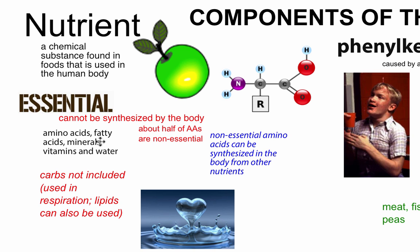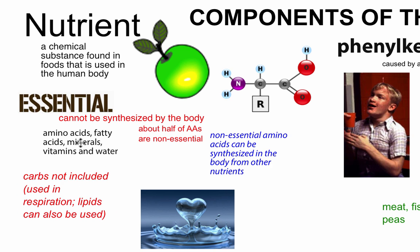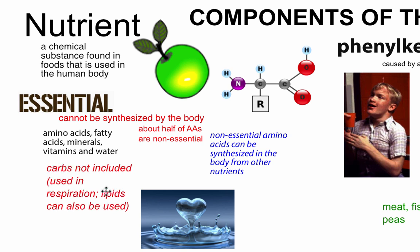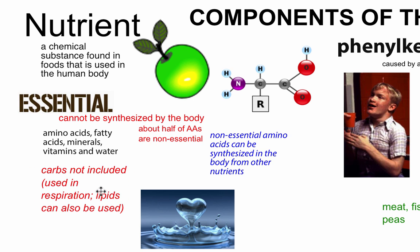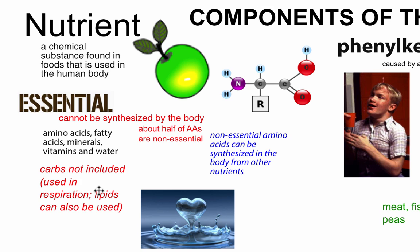Various types of essential nutrients include some amino acids — about half of them — some fatty acids, some minerals, vitamins, and water. We have to eat and drink to get all of this. Carbohydrates are not in this list of essential things because they're used in respiration, and lipids can actually be converted for use in respiration as well. So we can get energy and stay alive from just eating fats, but that brings up some other issues.